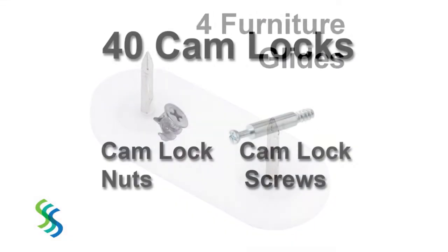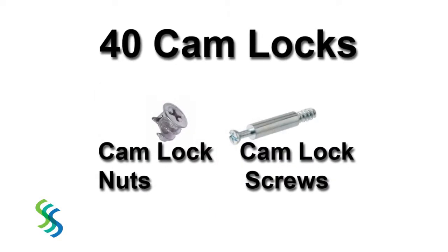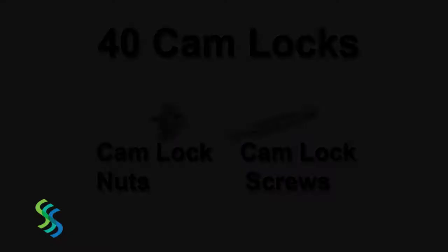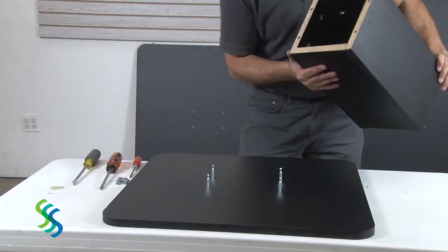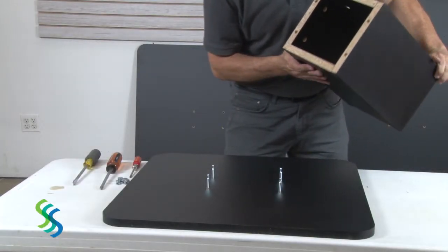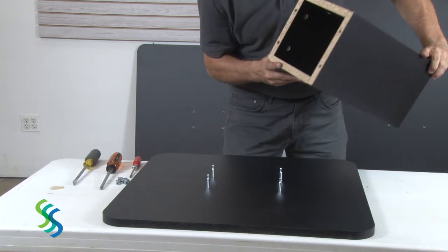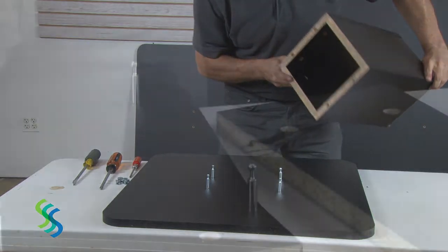The cam locks consist of a cam lock screw and a cam lock nut. Assemble the table upside down from the top tier to the bottom. Create a stand for each tier with four panels fastened together beneath each tier.